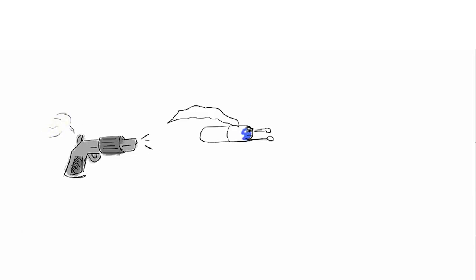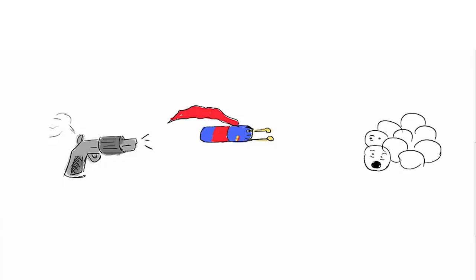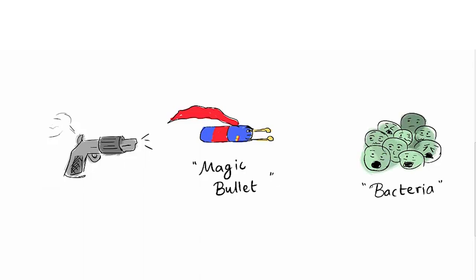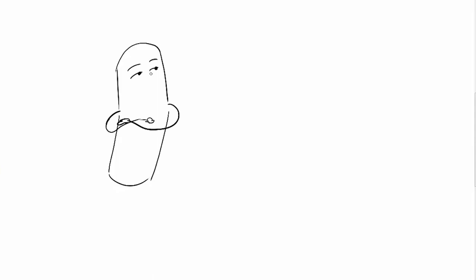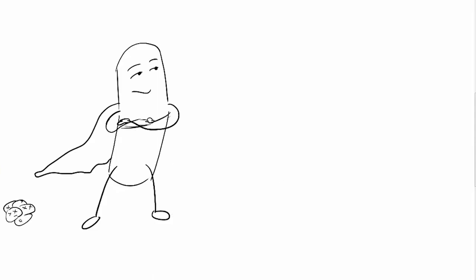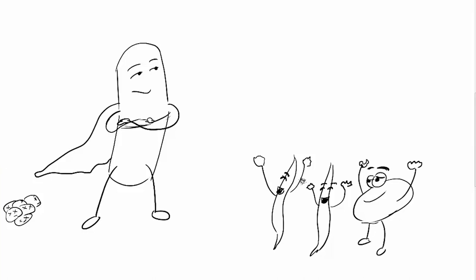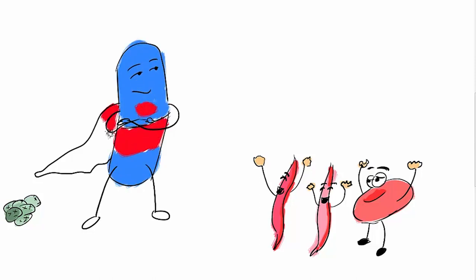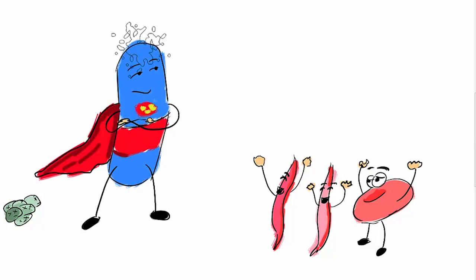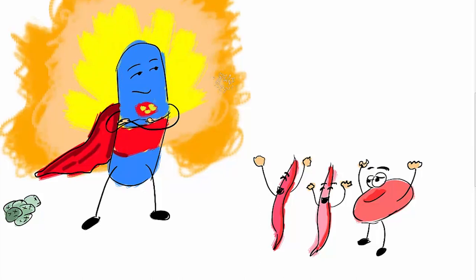A magic bullet is something that specifically affects a bacterium, for example in the case of an infection, and spares the normal tissue or humans. The fundamental characteristic of this magic bullet is that it should have affinity only towards bacteria and no affinity towards normal constituents of the body. This concept is the foundational basis of medicinal chemistry.